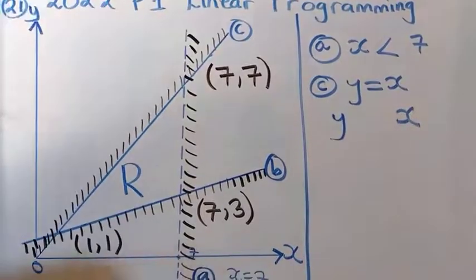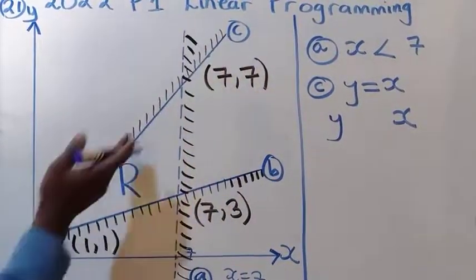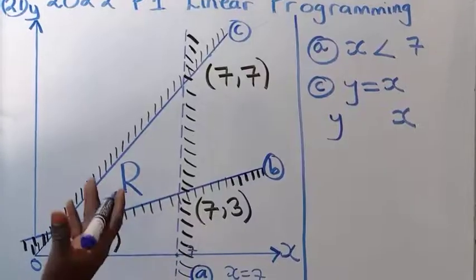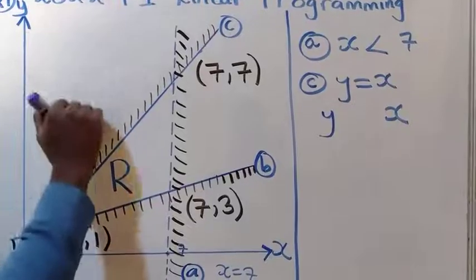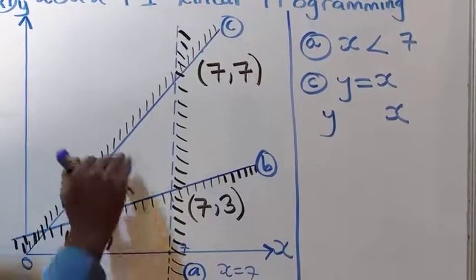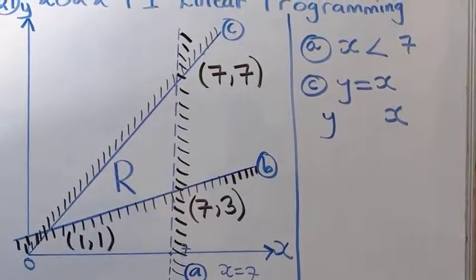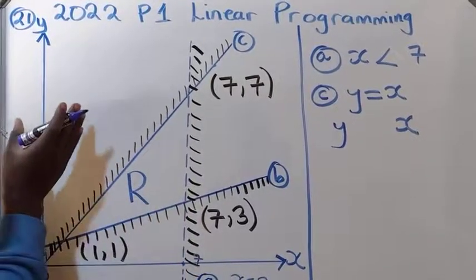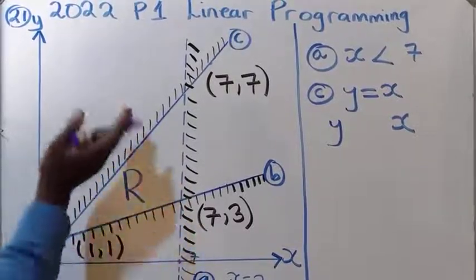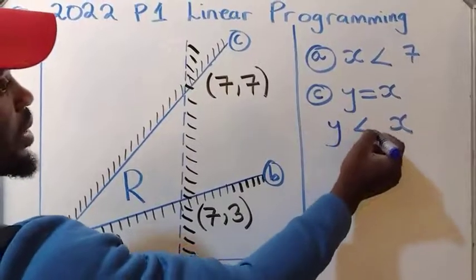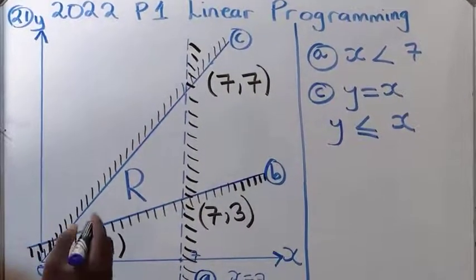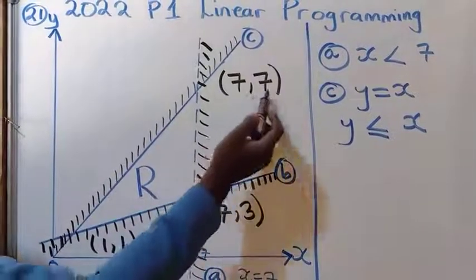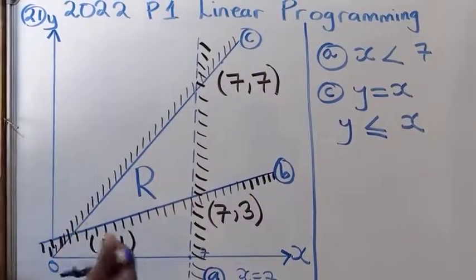Looking at the type of line for line C, it's a solid line, so it's going to have equal to — either greater than or equal to, or less than or equal to. Looking at the shaded part, it's shaded on top, so the upper region is greater and the lower region is less. We are defining the inequality using the unshaded part, which is the lower region — so that is less. Therefore we say y is less than or equal to x. We put equal to because it's a solid line.